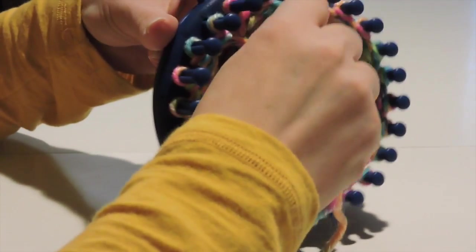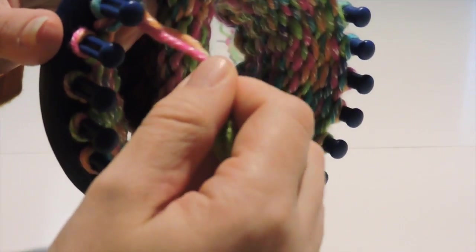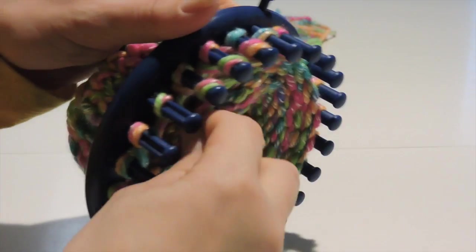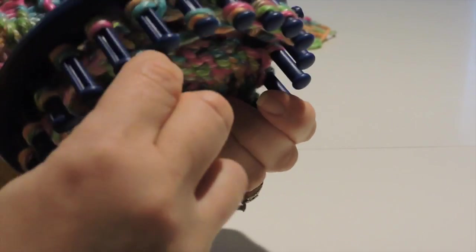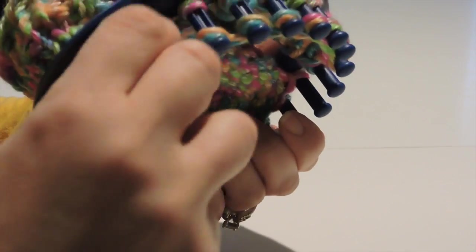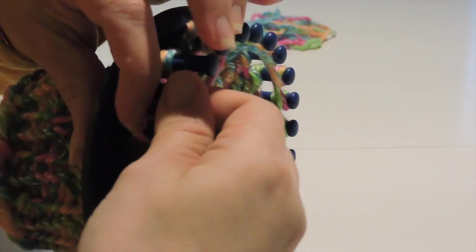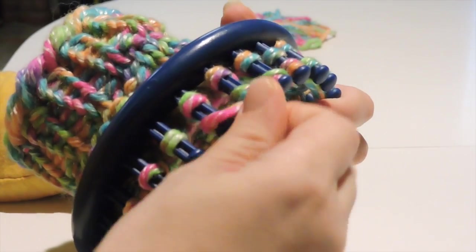Now that we're done with the thumb, we're going to leave it and continue E-wrapping all the way around our loom from the start of the anchor peg to the end all the way around. We're going to do 13 rows, which is what my daughter's hand is measured at. From the wrist to the tip of her fingers, it was approximately six and a half inches.